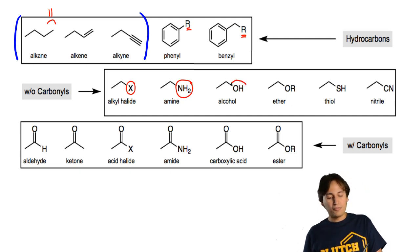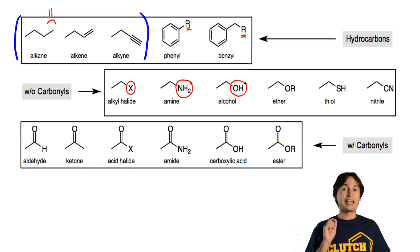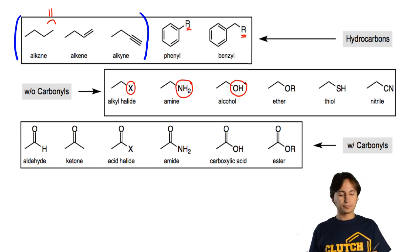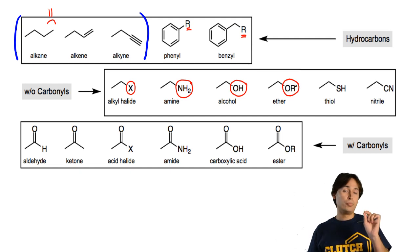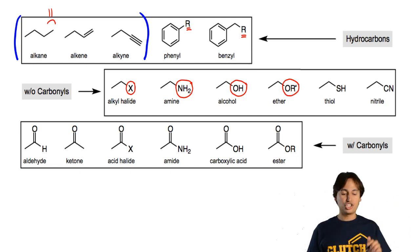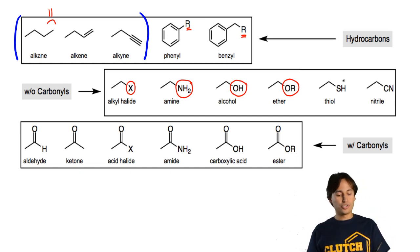Remember that if you attach an OH group to a carbon single bond, that would be called an alcohol. Remember that if you take that alcohol but put an R group attached to the O instead of an H, now that becomes an ether.